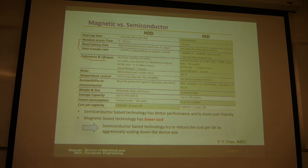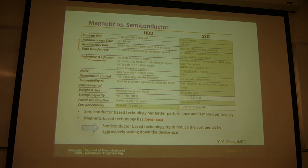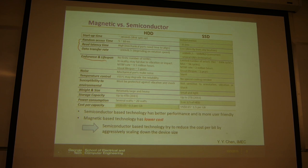There are other differences in various aspects, but in terms of cost, hard drives are still cheaper than SSDs. This is because the capacity or density of the hard drive is still larger than some SSDs.